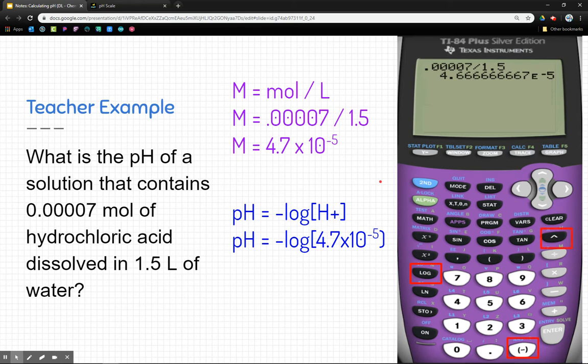Later on, when I do my exponent, I'm going to need my little caret here to get that negative 5 in the end. And so if I plug that into my calculator, that's what it's going to look like. Negative log, and then in the parentheses, 4.7 times 10 to the, using the caret, negative 5.